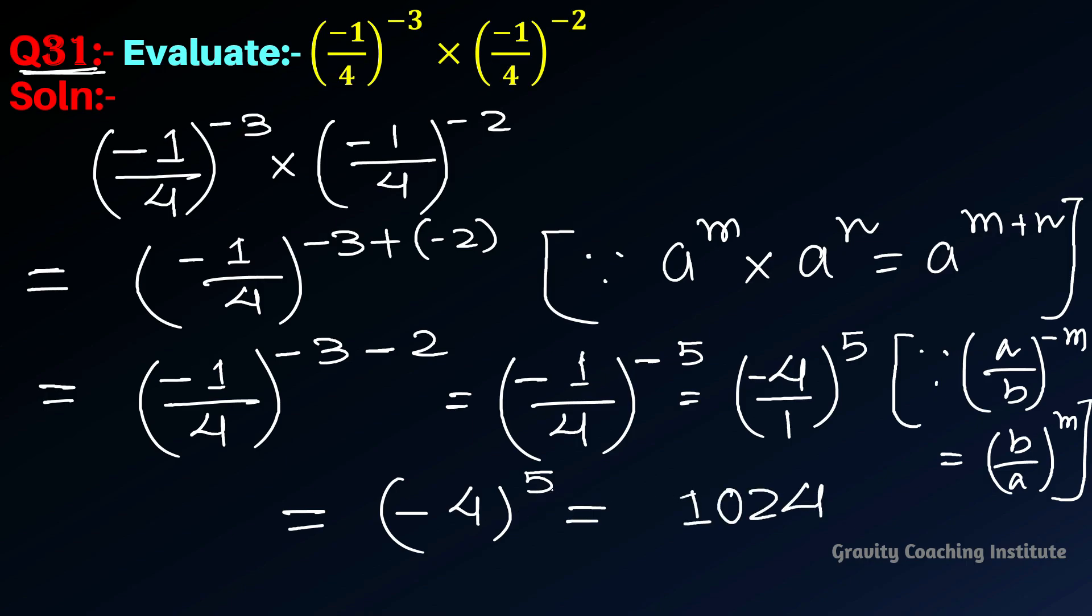And if the exponent is an odd number, then the result will be negative. Since (-1) raised to an odd power is negative, and 5 is odd, the final answer is -1024.